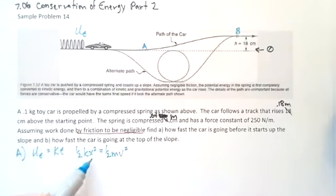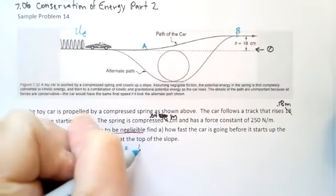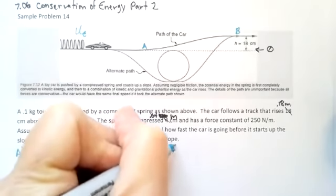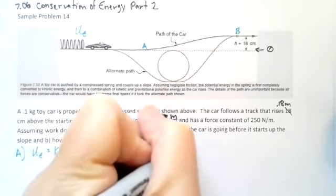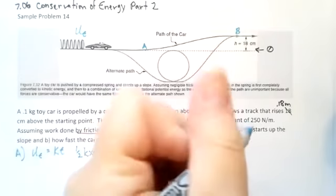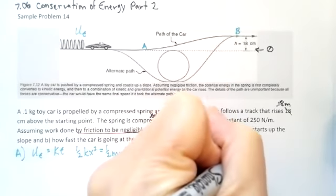When I bust that out, that's going to be one half K X squared equals one half M V squared. I have K, I have X, I have M. So I can solve for V. If you want to pause the video and run the calculations, go ahead. I'm just going to write them out now. It's going to be one half times 250 times 0.04 squared is one half times 0.1 V squared. And when you solve for V, you get 2 meters per second.